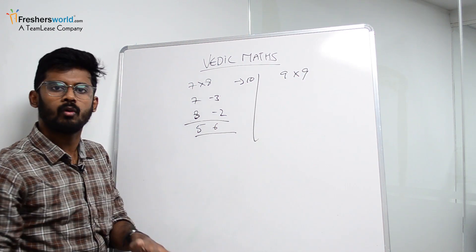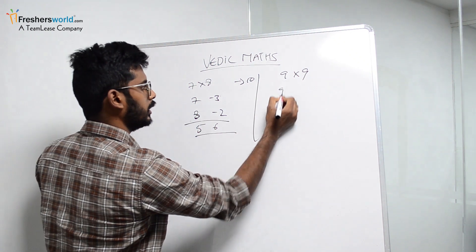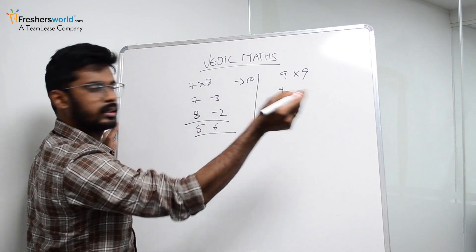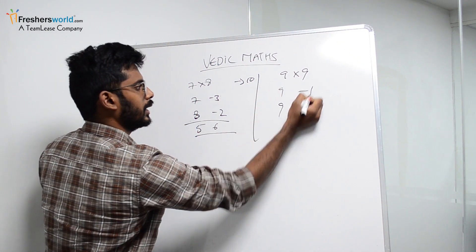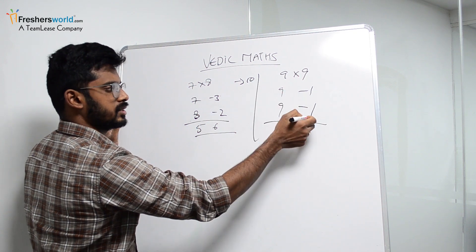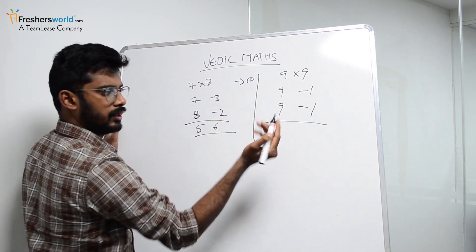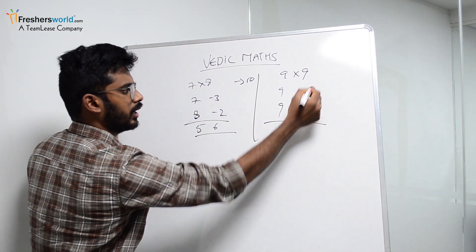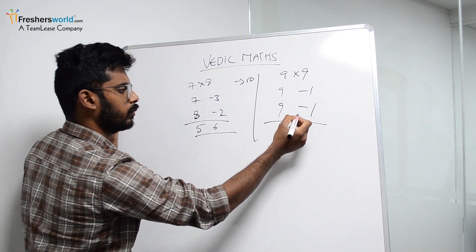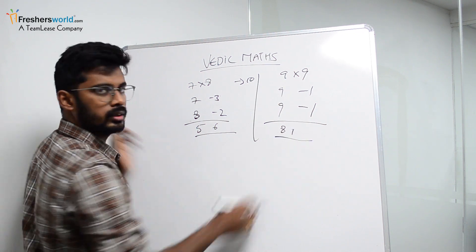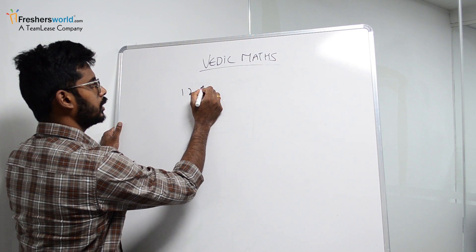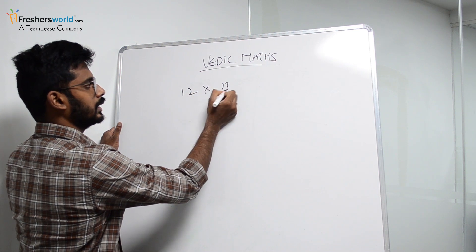Take another example: 9 into 9. How much closer to 10? Minus 1 and minus 1. So 9 minus 1 is 8, and 1 into 1 is 1. So the answer is 81. That simple!